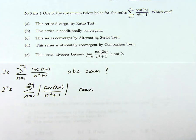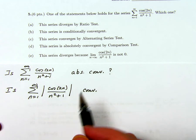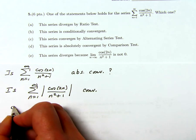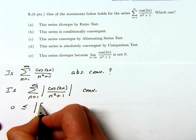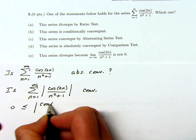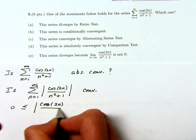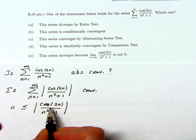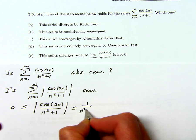We get a hint in the solutions here that we ought to check that using a comparison test. And I should probably compare this, since 0 is less than or equal to these absolute values. That's cosine 2n over n squared plus 1. Cosine is between 0 and 1, so that's less than or equal to 1 over n squared plus 1.